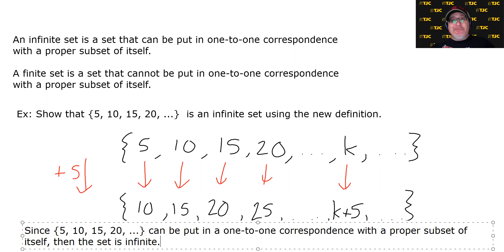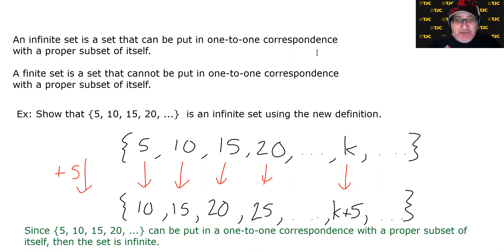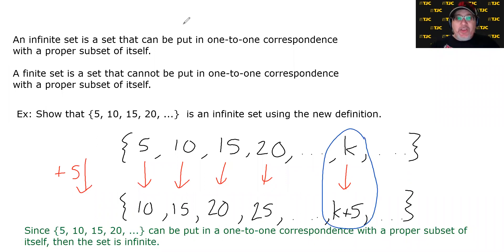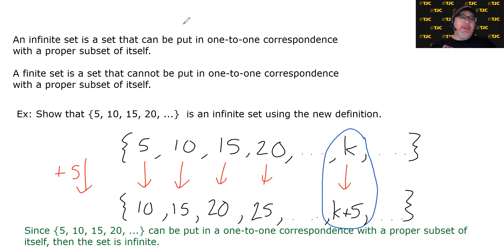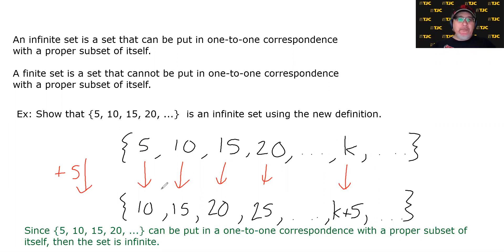The easiest way to do this is to lop off the first element, move everybody over one space, and then you have your one-to-one correspondence. Basically, you're corresponding one element in the set with the next element in the set, assuming there's some sort of order. That's our new definition of an infinite set: a set that can be put in one-to-one correspondence with a proper subset of itself.